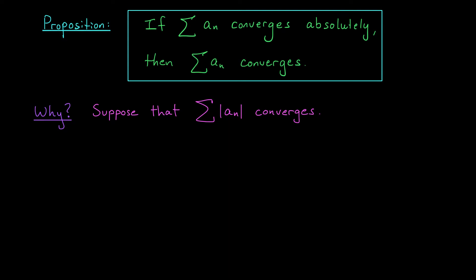Why is this the case? We're actually going to be able to show it's true using the comparison test. Let's suppose that we start with a series that converges absolutely — that is, the sum of the absolute values of the a_n's is convergent — and we want to show that our original series is convergent. You might think: can't we just say that a_n is less than or equal to the absolute value of a_n, and obtain the result through the comparison test? But the comparison test requires that the terms a_n be positive, so we have to be a little bit sneaky here.